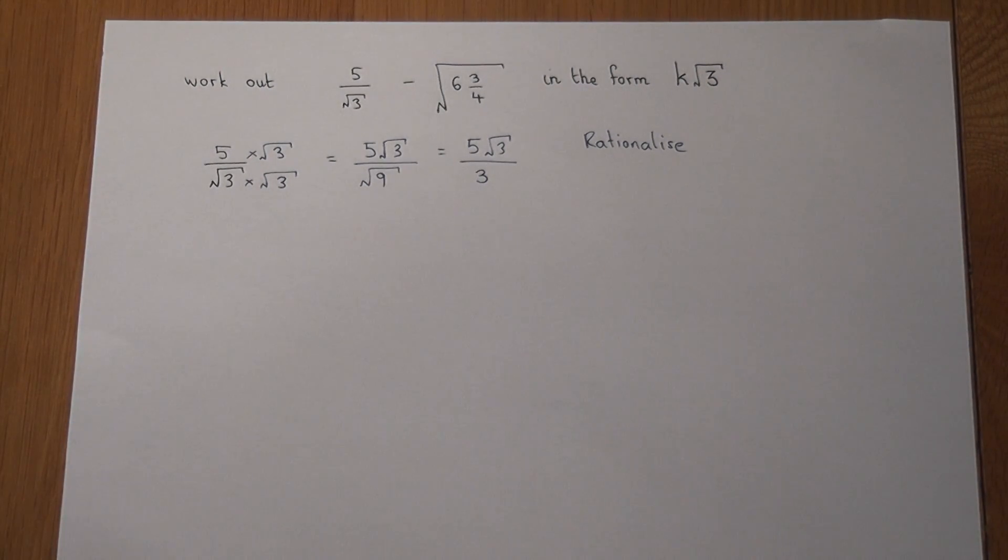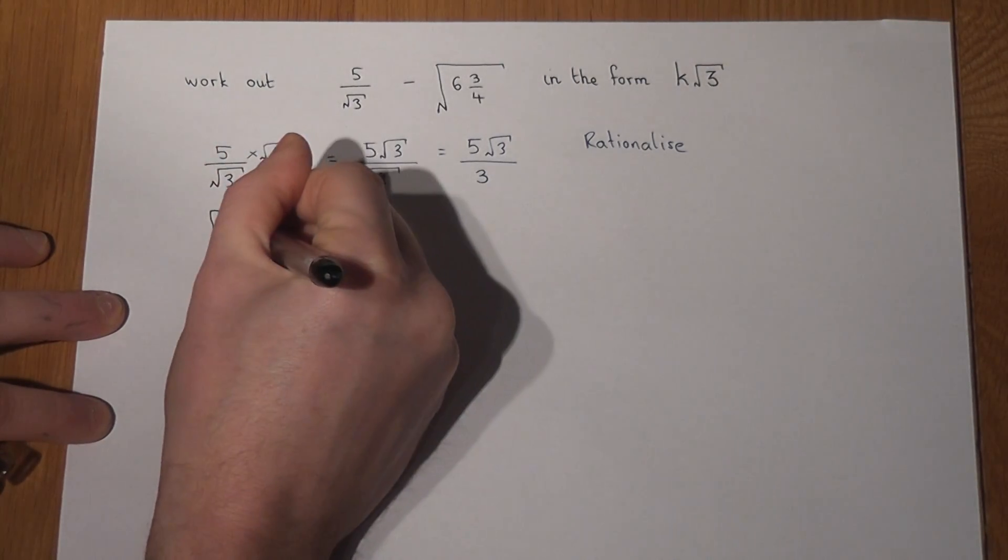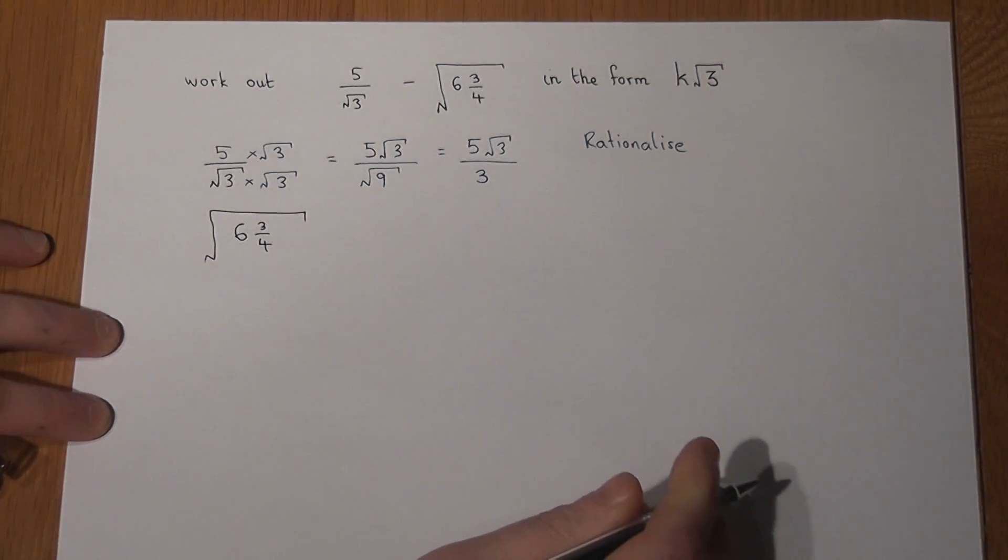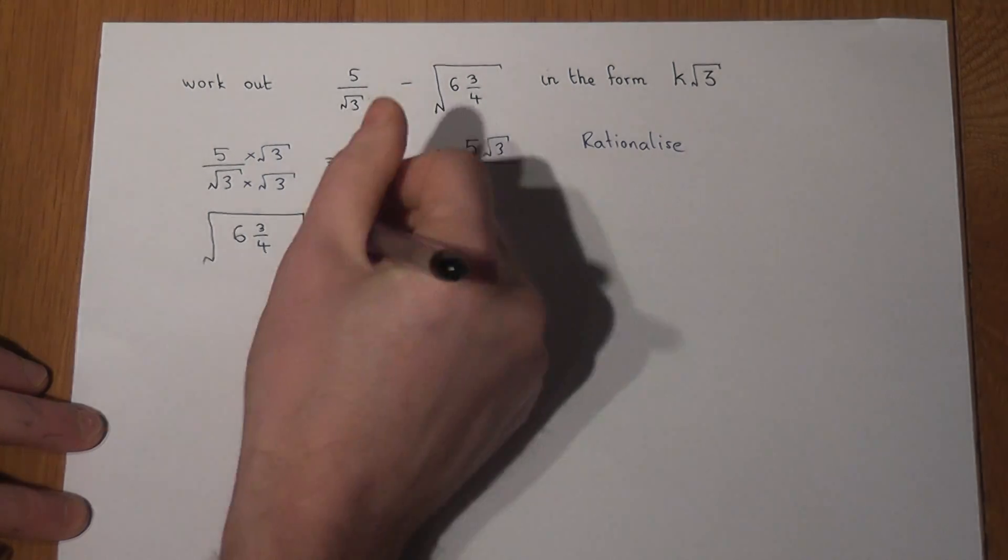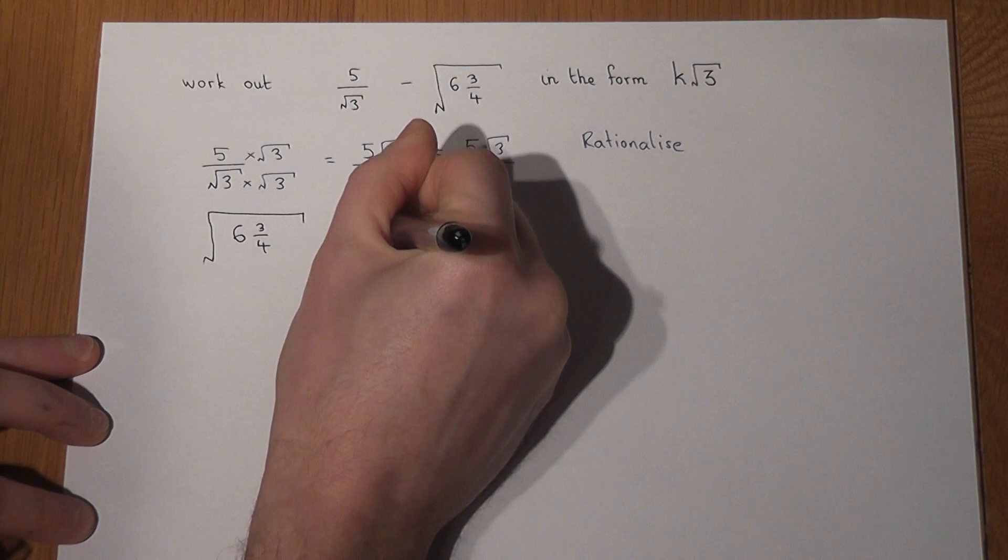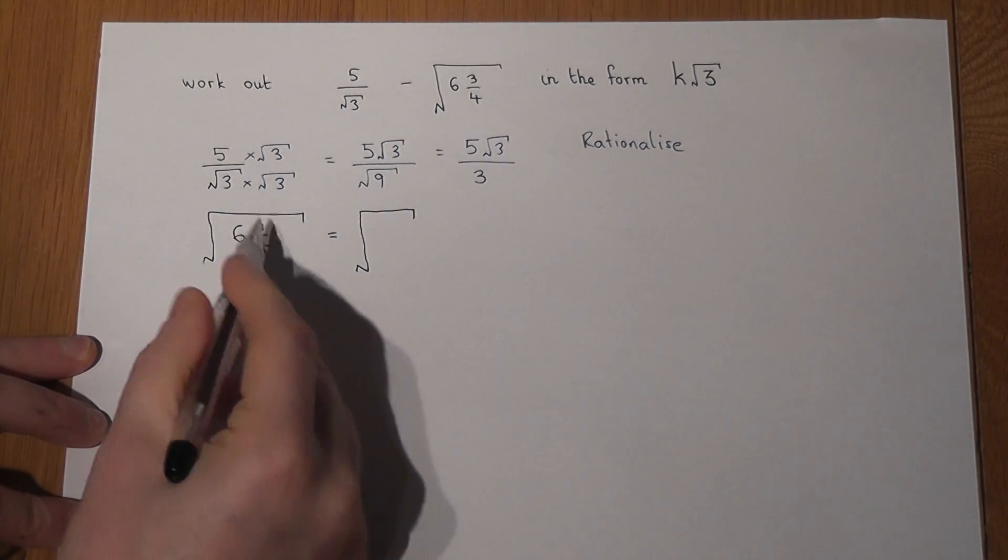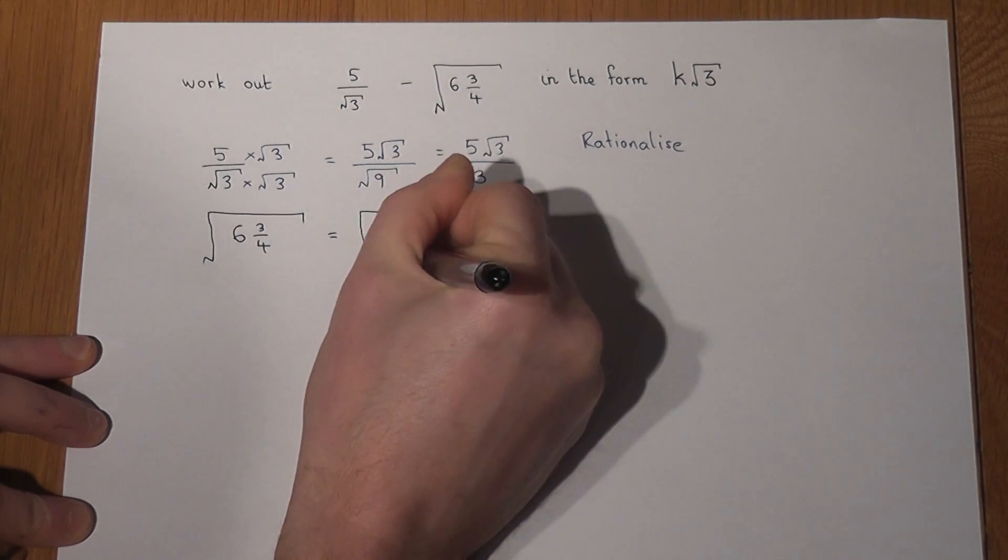Now the second part looks a bit more advanced and a bit more difficult to deal with. We've got this big square root of a mixed number 6 and 3 quarters. Now when we deal with mixed numbers one good technique is to write it as a top heavy fraction. 6 times 4 is 24, add the 3 is 27 all over 4.